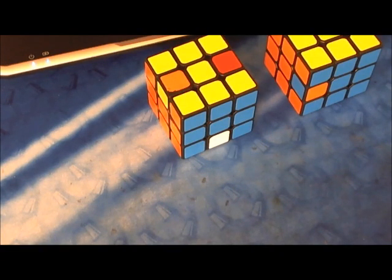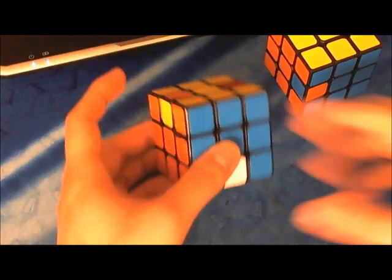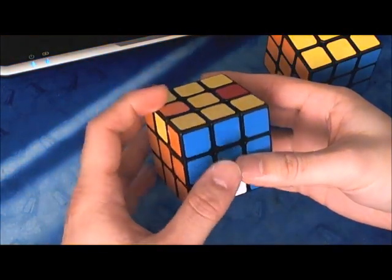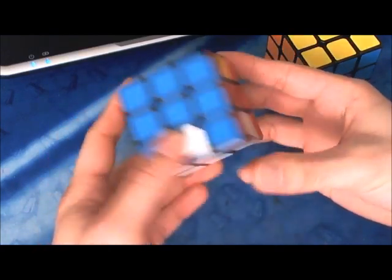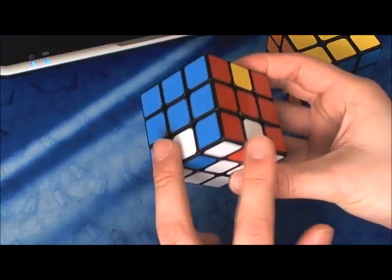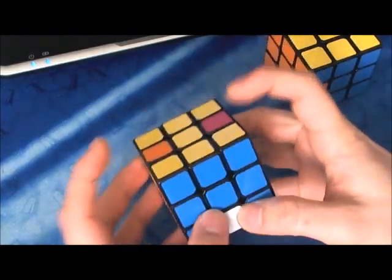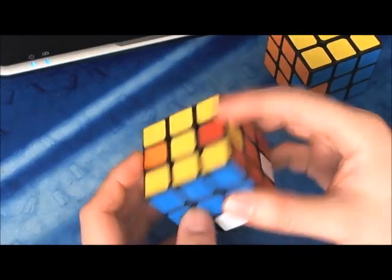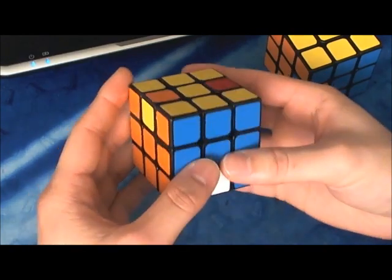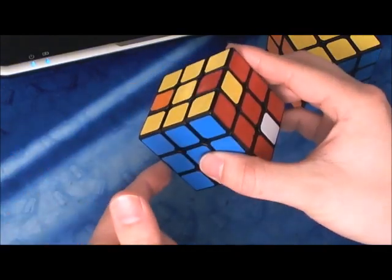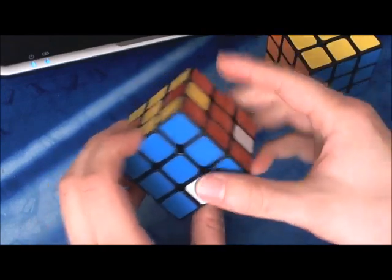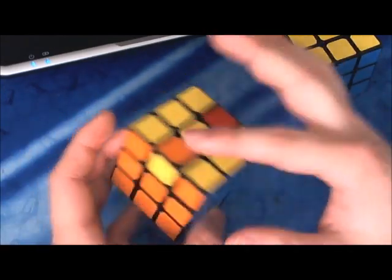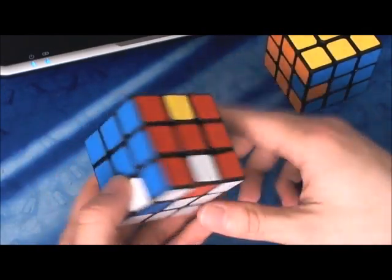This category is called placing edges individually, and as the name suggests, what you'll be doing is manually forcing the edges onto the face you want with the moves. Here's an example: I have two wrong edges over here, and two wrong edges over here. What you're going to do is first put this one over here, then put this one over here, and then you would put this one over here.